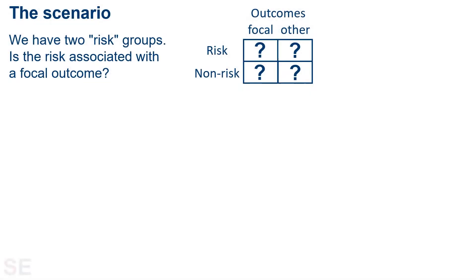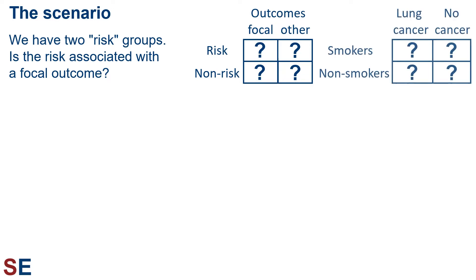The relative risk, odds ratio, and risk difference are the statistics we use when we have two risk groups — risk and non-risk — and when we're interested in the question: is the risk associated with a focal outcome? For example, we could think about groups that smoke and don't smoke, the two values for the risk factor, and their chances of getting lung cancer or not, the values for the outcomes.